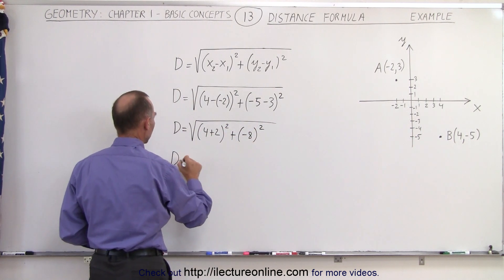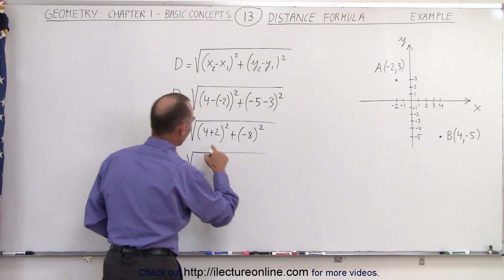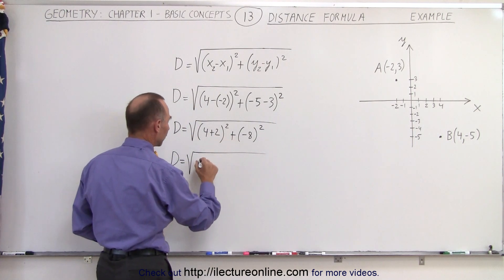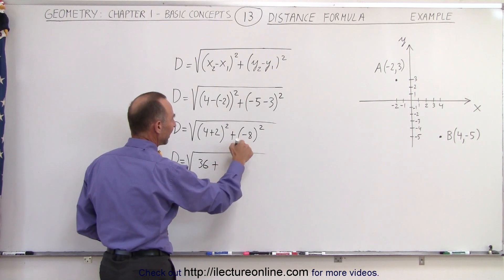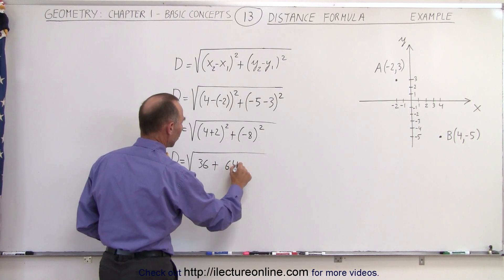So the distance is equal to the square root of 4 plus 2, that's 6, 6 squared is 36 plus a negative 8 squared is 64.